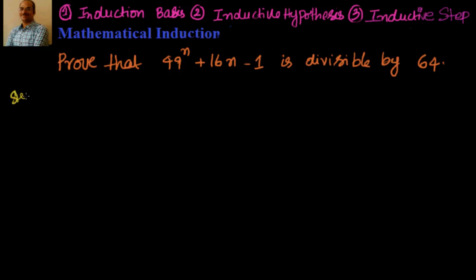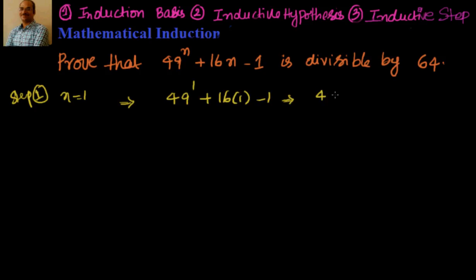Our step 1 is always to prove it true for n equal to 1 — that's the induction basis. So if I substitute n equal to 1, that gives me 49 to the power of 1 plus 16 into 1 minus 1. That's nothing but 49 plus 16 minus 1, which is equal to 64. We know that 64 is divisible by 64 one time. So let's go to step 2.